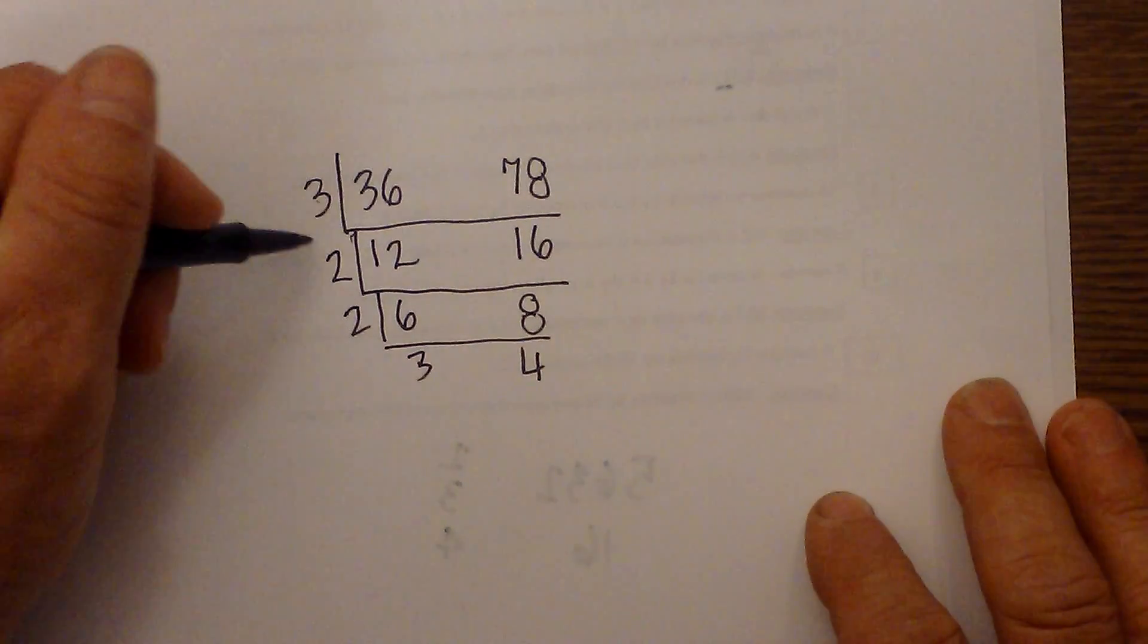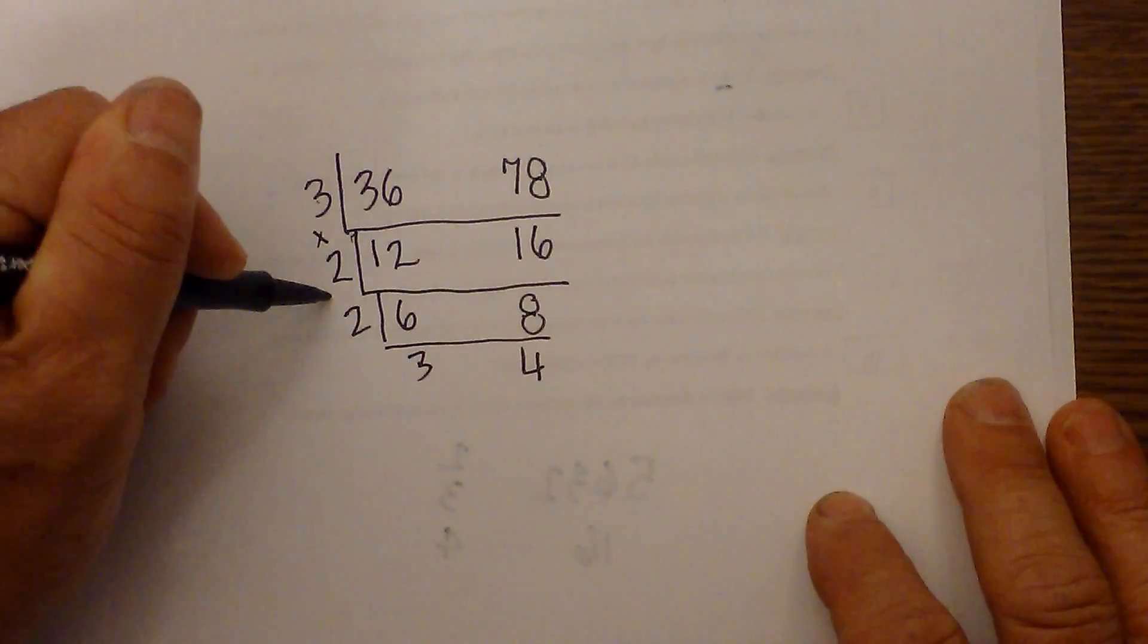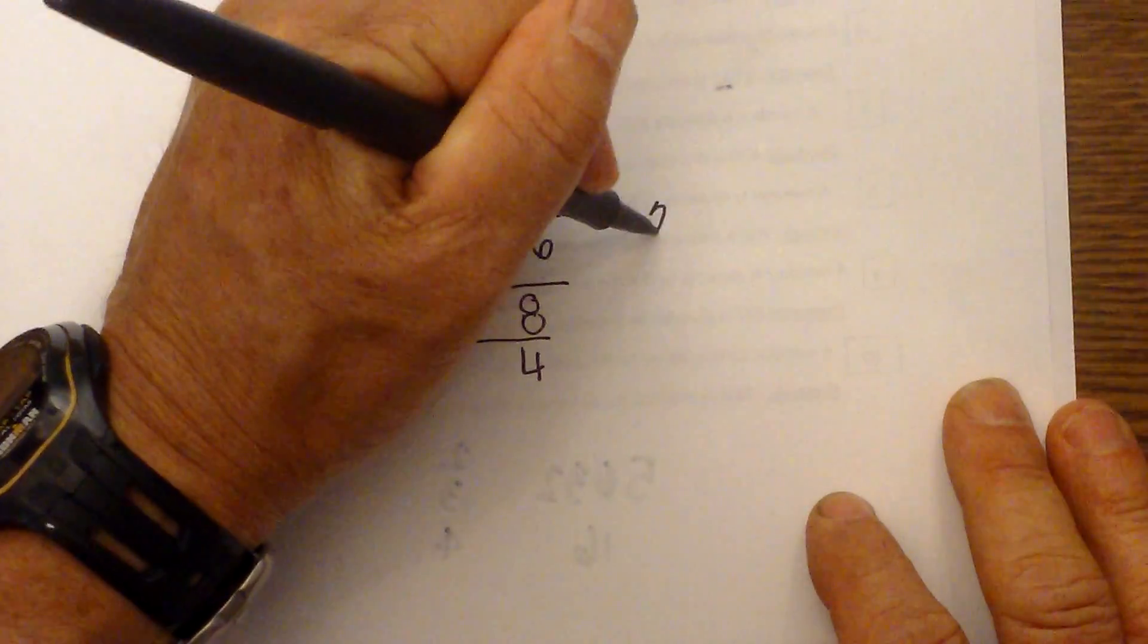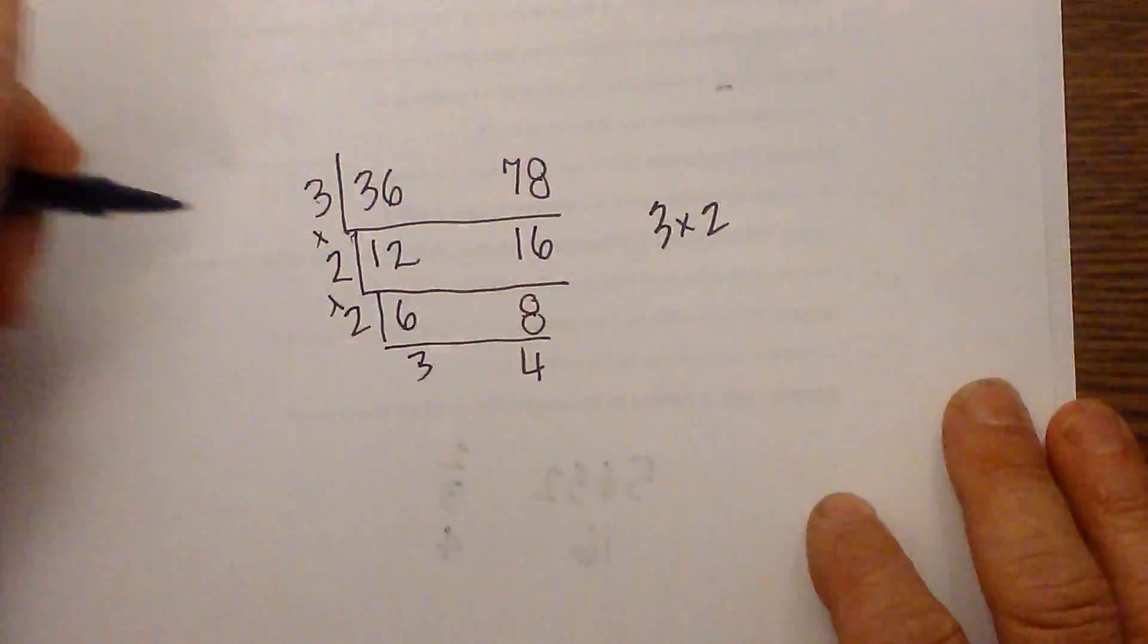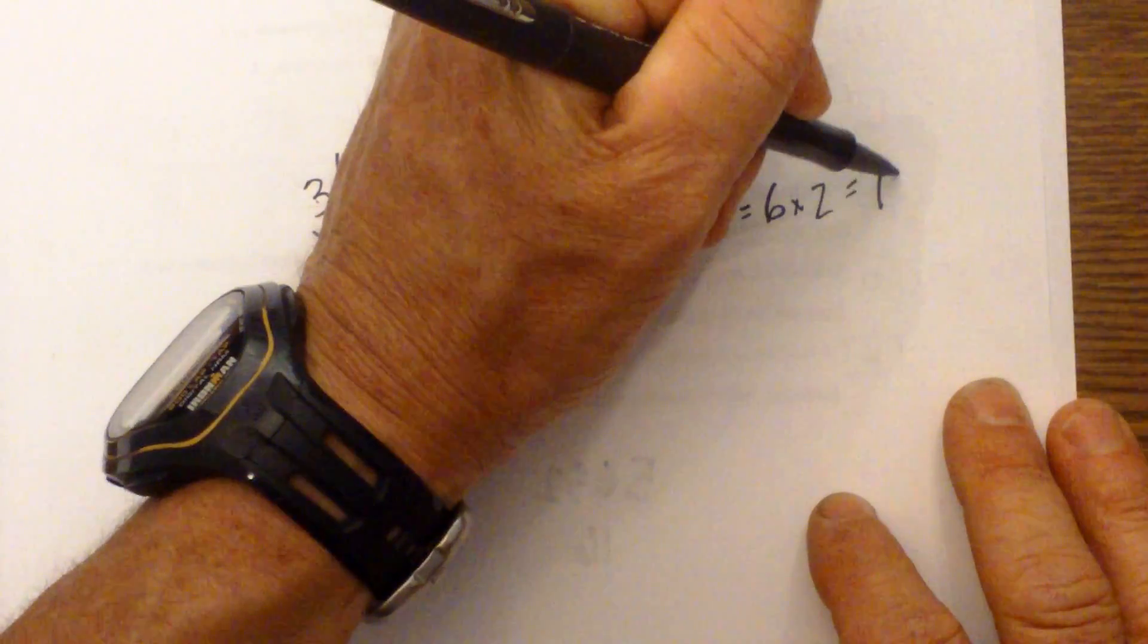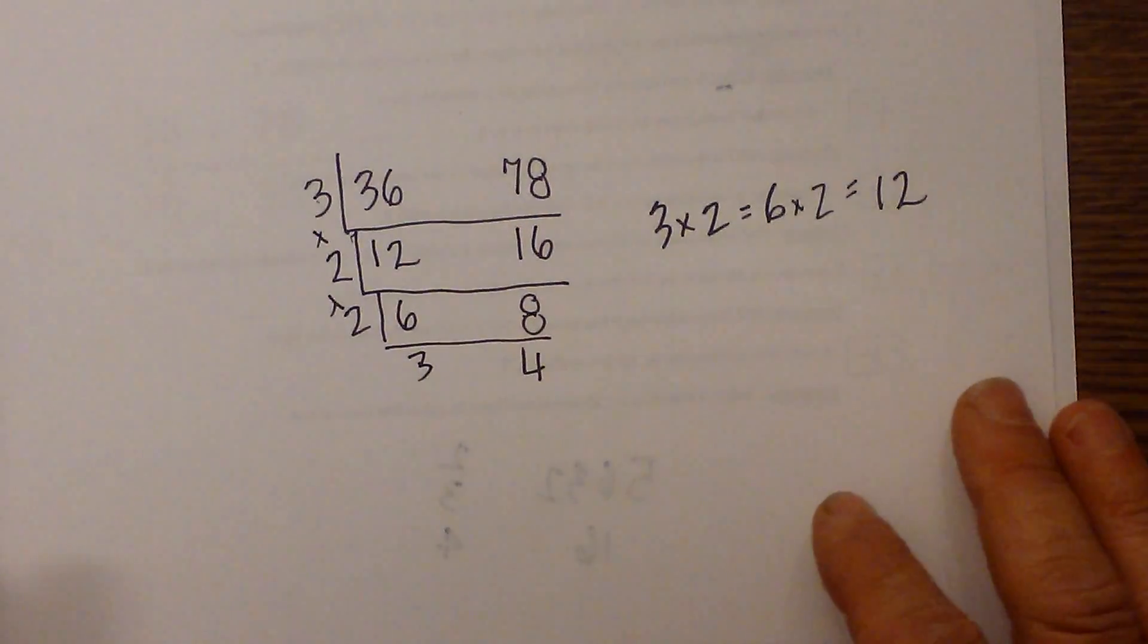So to find the greatest common factor, I just multiply 3 times 2 times 2. So I'll rewrite this 3 times 2 is equal to 6 times 2 is equal to 12. So the greatest common factor will be 12.